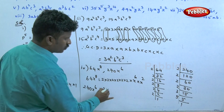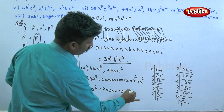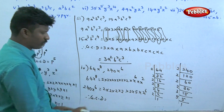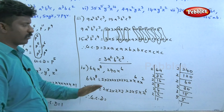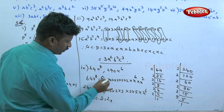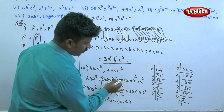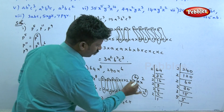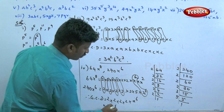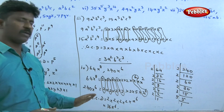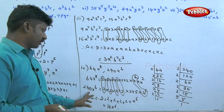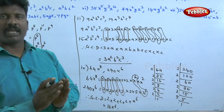So for 240: 2 × 2 × 2 × 2 × 3 × 5. The common factor between 64 and 240 is 16. For x, x^6 is common. Checking: 16 goes into 64 four times, and 16 × 15 = 240. So the GCD is 16x^6.